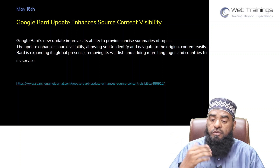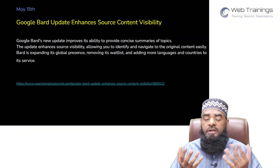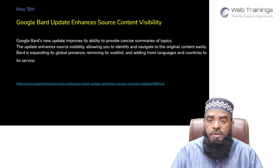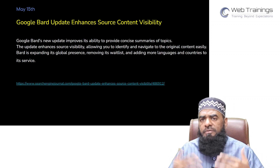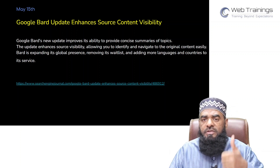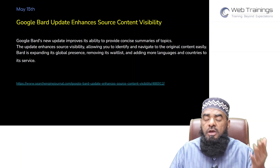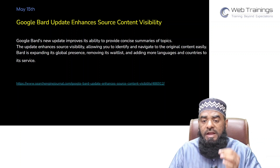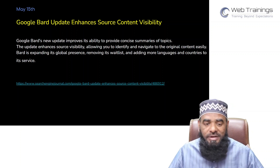The second Bard feature is that when we ask certain questions and Google takes information from certain sources, it will now provide more details about those sources. The content from where Bard is generating information will be visible to us — this is source visibility, which is a great thing for publishers. So two things in Bard: better content summarization and new source content visibility.